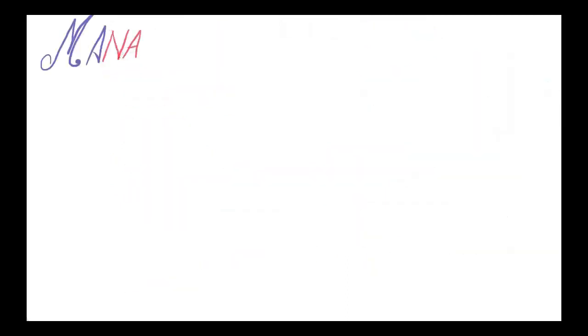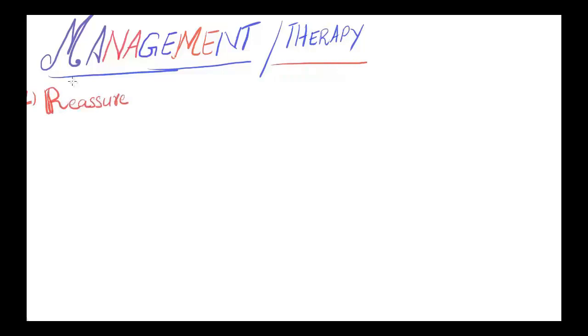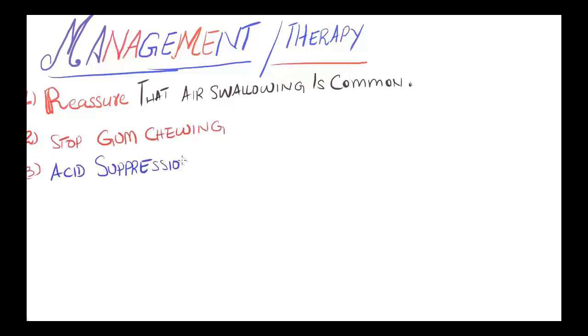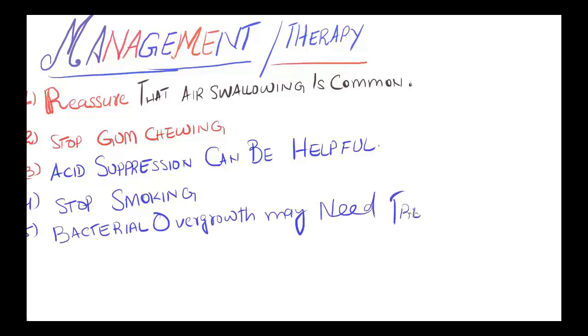Management of the patient with bloating: First, reassure the patient that air swallowing is very common. If the patient habitually chews gum, stop gum chewing. Stop smoking. Acid suppression can be helpful by using either H2 blockers or PPIs. Bacterial overgrowth may need treatment. Most importantly, dietary modifications including decreased intake of legumes, beans, and fruits can help.